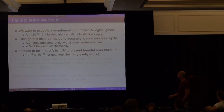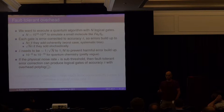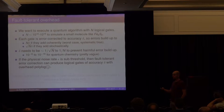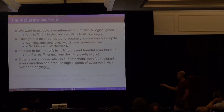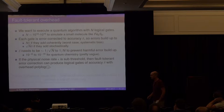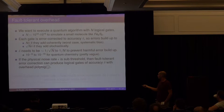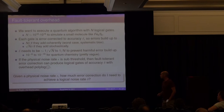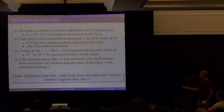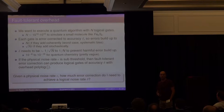If the physical noise rate epsilon is sub-threshold, we can achieve logical noise rate delta at a cost which is polylogarithmic. The constants can be very important though. The key question driving part of my research for almost a decade is: given a physical noise rate epsilon, how much error correction do I need to achieve a logical noise rate delta?